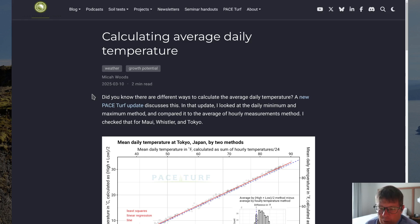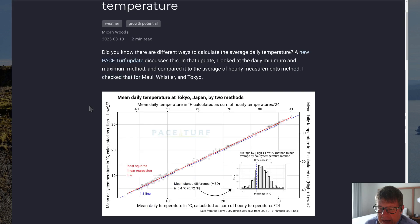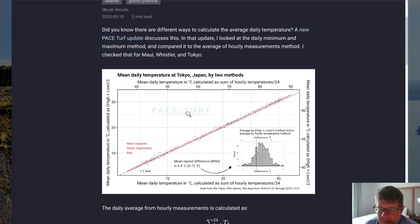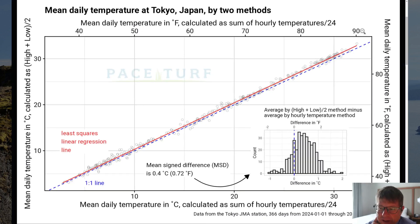I checked that for Maui, for Whistler, and for Tokyo. And I then showed a chart which shows the mean daily temperature at Tokyo, Japan, and I calculated that by two methods. So, the two methods are this. You take an hourly temperature measurement, which is not the average across the hour, it's just a measurement on the hour. So, you get 24 measurements over the course of a day, and you take the average of those. And that's the way that this is done by the Japan Meteorological Agency. So, in Japan, when the Japan Meteorological Agency reports an average daily temperature, they are reporting it as the average of 24 hourly measurements.